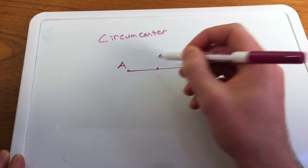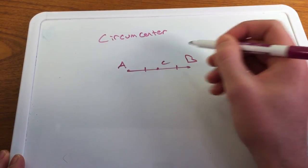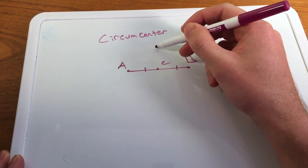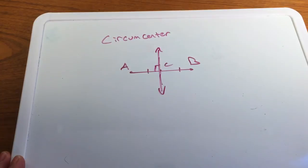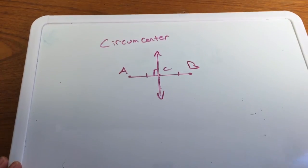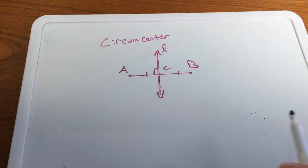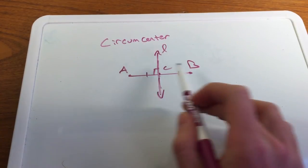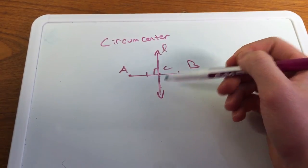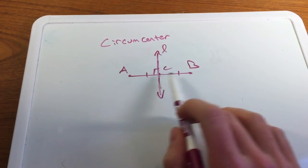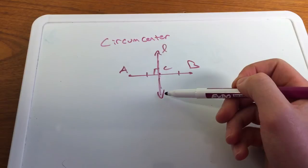The bisector cuts the segment right at the midpoint, making the two resulting segments congruent. We call that middle point C, with a line coming through it. Line L is a perpendicular bisector of segment AB because it bisects AB — cutting it into two congruent segments at its midpoint — and it is perpendicular to segment AB.